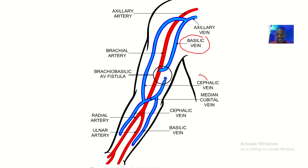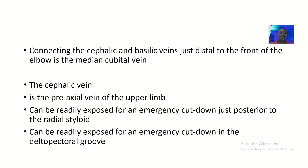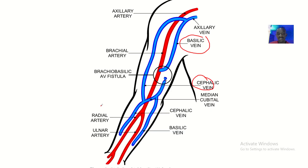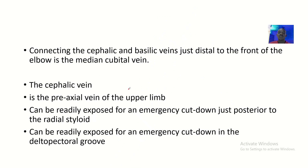The cephalic vein is on the lateral side. Connecting the cephalic and basilic veins, just distal to the front of the elbow, is the median cubital vein. You can see the median cubital vein right here.